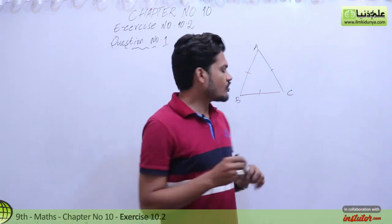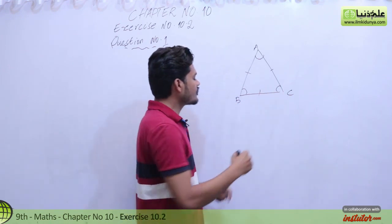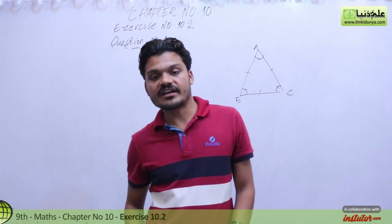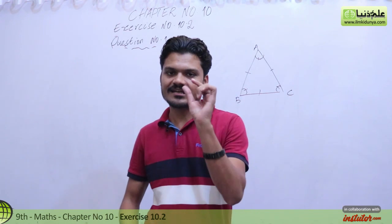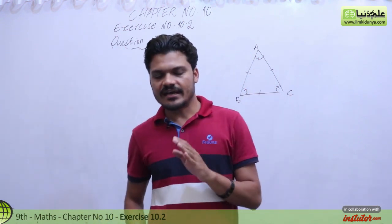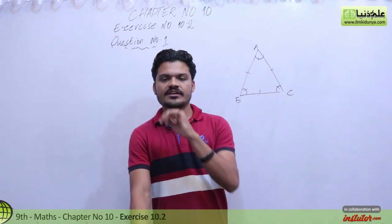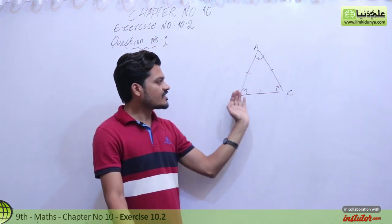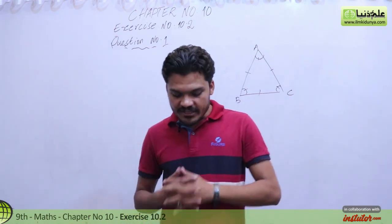If all three sides are equal, then all three interior angles are also equal. Since the sum of angles in a triangle is 180°, and all three angles are equal, dividing 180 by 3 gives 60°. So each angle is 60°. In an equilateral triangle, all interior angles are equal: angle A equals angle B equals angle C. Also, all sides are equal: AB equals BC equals AC.